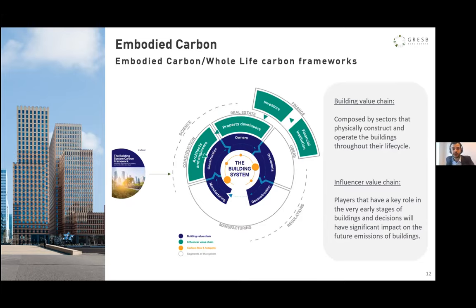One interesting takeaway from the Building System Carbon Framework is that it specifies two different value chain flows. The first is the building value chain — composed of sectors that physically construct and operate buildings throughout the lifecycle, and are directly responsible for their emissions. On the other hand, we have the influencer value chain, which plays a key role in the very early stages of a building — design and planning stages — and whose decisions impact the future emissions of the building. This is where GRASB sits, as an influencer value chain actor trying to trigger change from the top down.